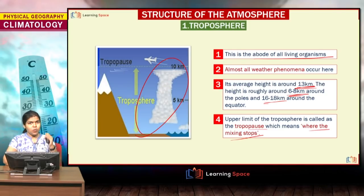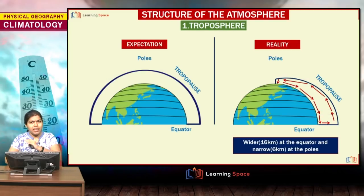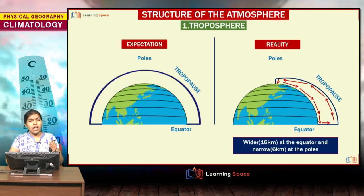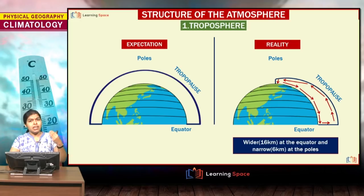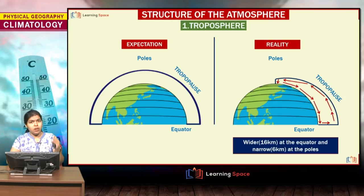The upper limit of the troposphere is known as the tropopause — a zone of pause where mixing stops and there is no further turbulence. We will be dealing with the tropopause in detail. I have designed this entire module in a question-and-answer format so that it will be beneficial for you in both mains and prelims, as there can be numerous questions from this one module alone.